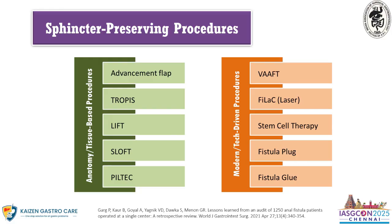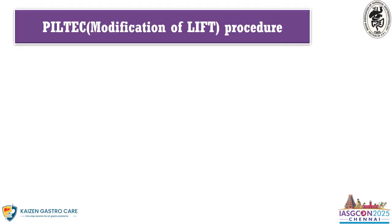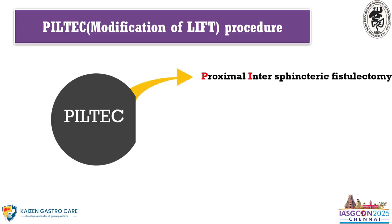If you want a sphincter-preserving procedure, there is no need for any tech-driven procedure. Simple anatomy or tissue-based procedures are the best. From the five options, master one and you will get the best outcome. Our intention as surgeons is not to reduce the wound or pain — that is only a few days' concern. Our intention is to preserve continence and give the best possible outcome. Any one of the tissue-based procedures, mastered well, is more than enough. In modern tech-driven procedures, if you want to use them, that is fine — but do not compromise the surgical core thought process by, for example, not adequately addressing a large abscess cavity just to avoid a larger incision.